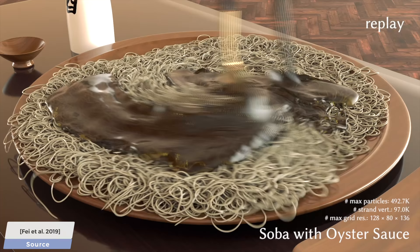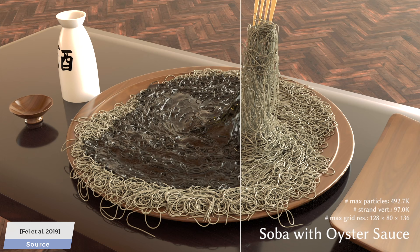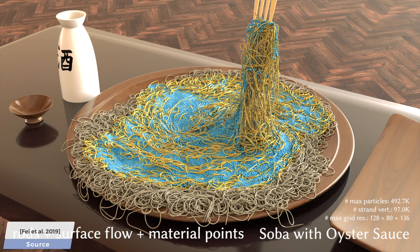I particularly like this animation with the oyster sauce, because you can see a breakdown of the individual elements of the simulation. Note that all of the interactions between the noodles, the sauce, the fork, and plate have to be simulated with precision. Love it!